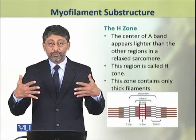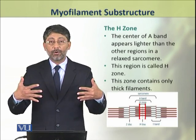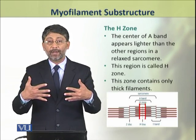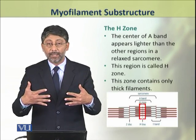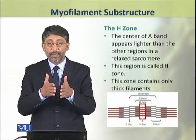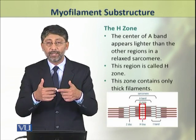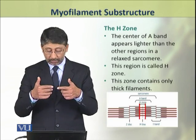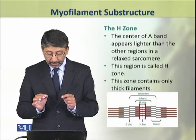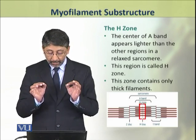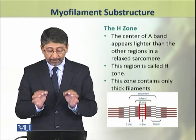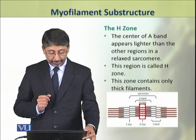In the A-band, thick and thin filaments overlap. However, in the central portion, only thick filaments are present, and because there is no overlap in this region, it appears comparatively lighter.